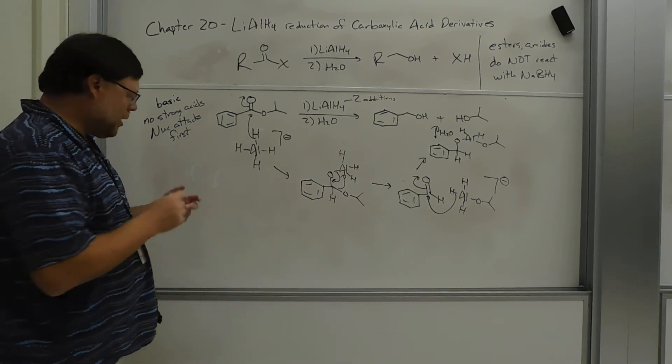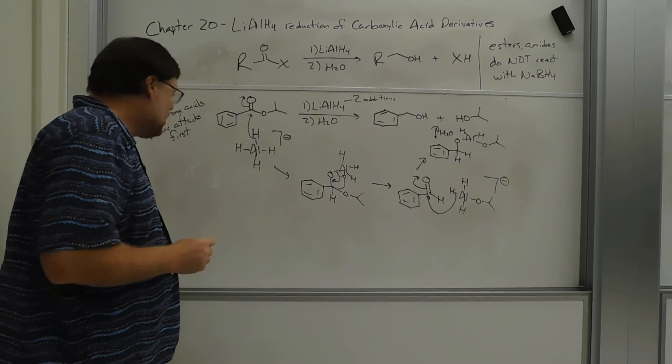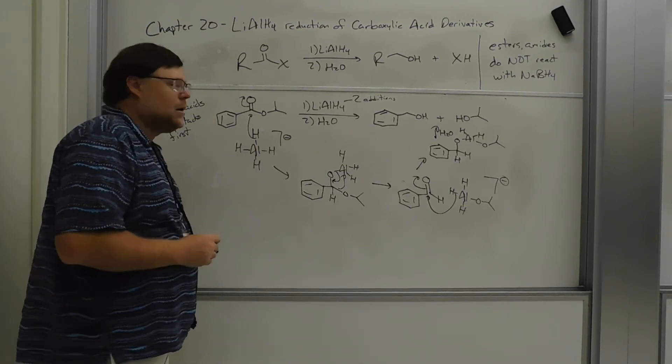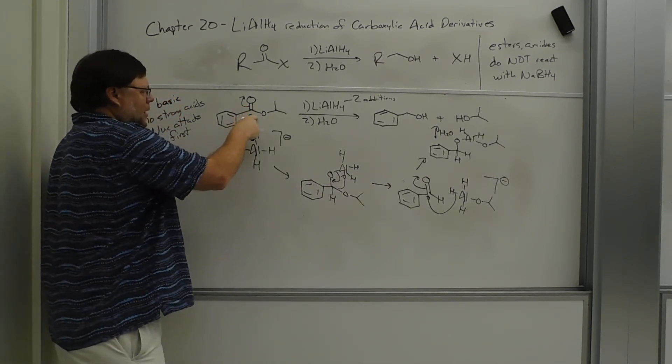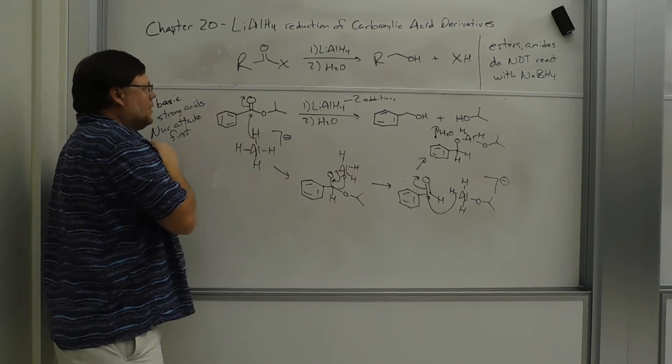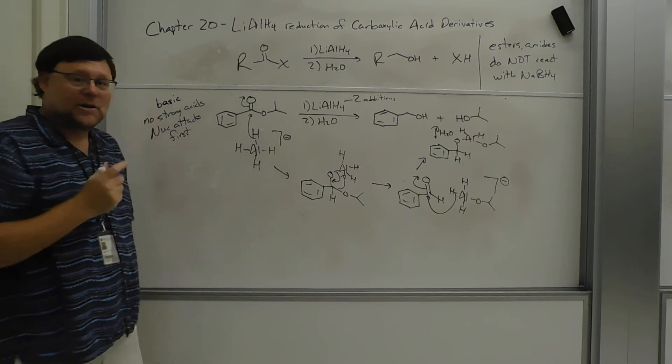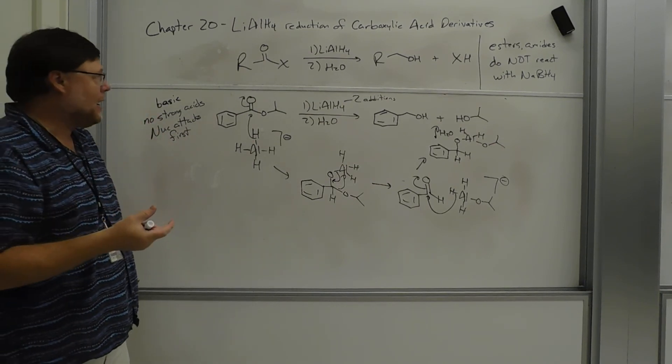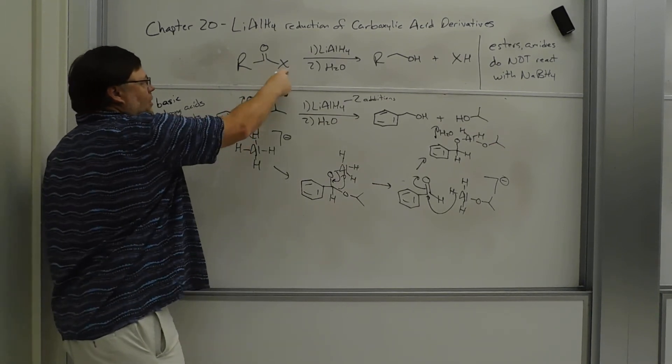All right, so you're going to break your ester. You're going to break your ester into two alcohols. You're going to get a primary alcohol from the carbonyl, right? That carbonyl carbon is going to get two hydrogens and turn into a primary alcohol.